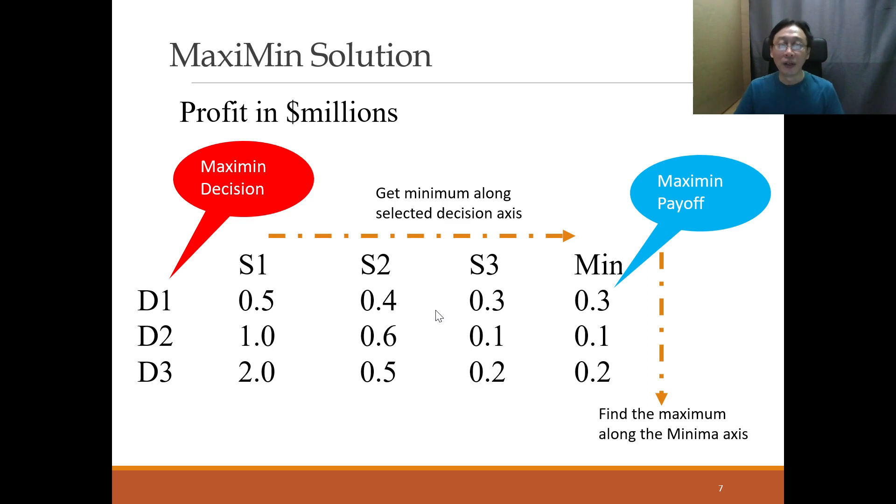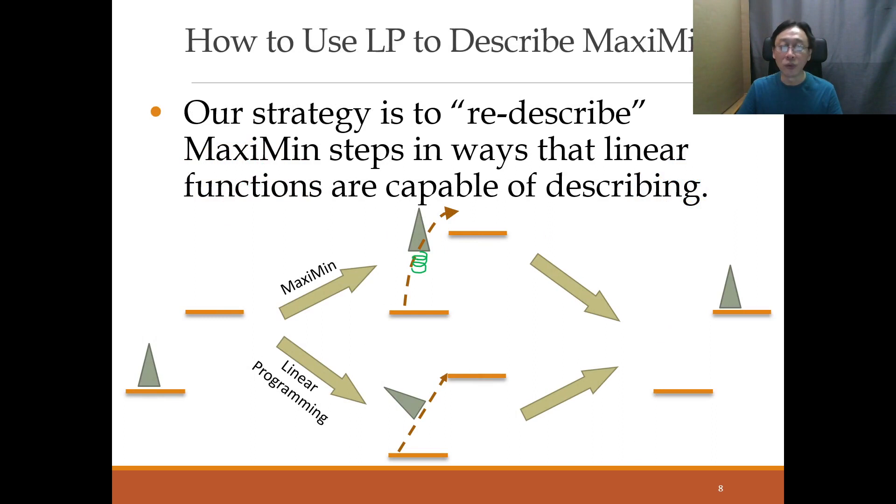And so our decision making process is that we arrive at the Maximin payoff of 0.3 million with the best decision alternative being D1. So that is Maximin decision and payoff. Now, if we think along the lines of linear programming, then obviously decision D1, the letter D1, the phrase D1, cannot be the objective function value. So it remains to be the payoff that can be spoken about, that can be described by LP language in terms of the optimal value is the 0.3 million. So how do we do that? Now, first of all, is that even making sense?